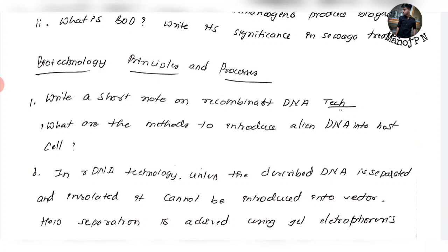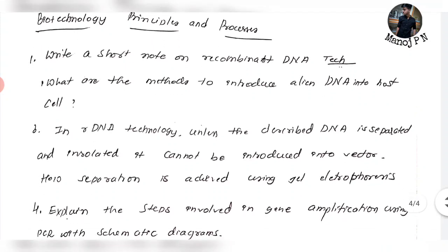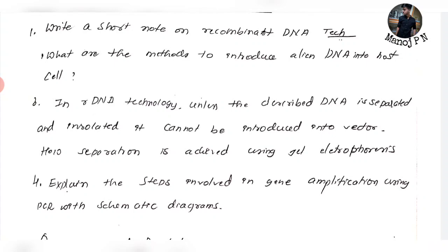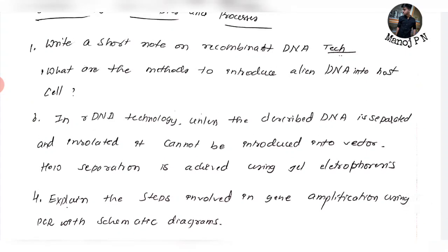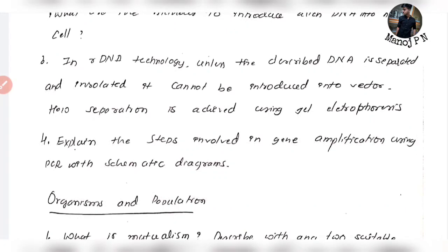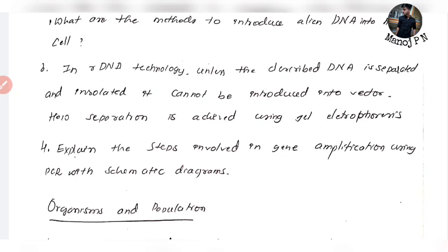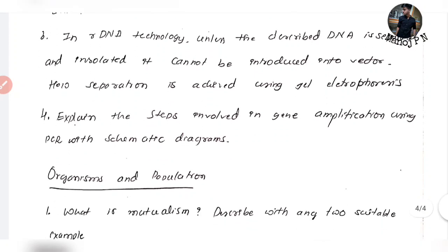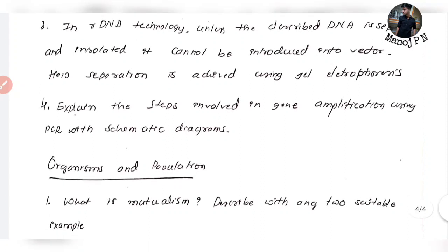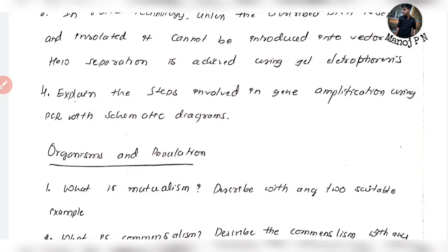Biotechnology — principles and processes — is a very important chapter. Write a short note on recombinant DNA technology. What are the methods to introduce alien DNA into host cells? In recombinant DNA technology, unless the described DNA is separated and isolated it can't be introduced into a vector. How is separation achieved? Using gel electrophoresis — this is a very important part. Gene amplification using PCR with a schematic diagram — gene amplification with schematic representation.